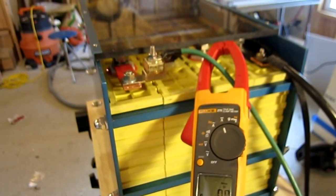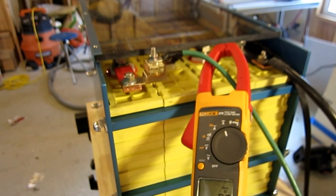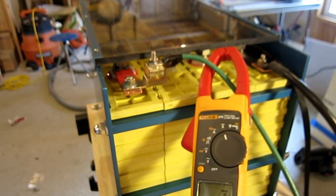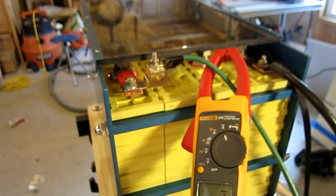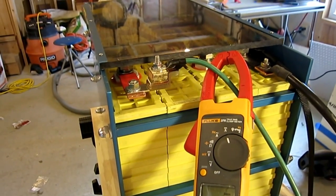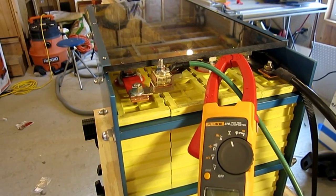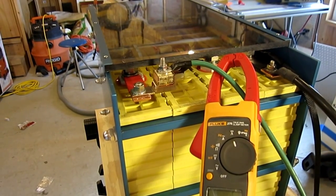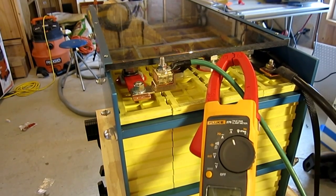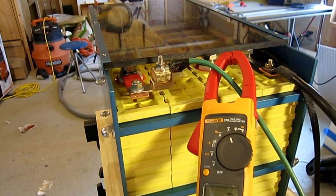The ABYC does allow for an exemption for starting motor circuits. But my argument is that on a boat with a 1-2-both switch, either bank could be the starting bank and either bank could be the house bank. On small motors, such as on sailboats or some of the small gas engines, we can easily fuse these banks for not a lot of money.